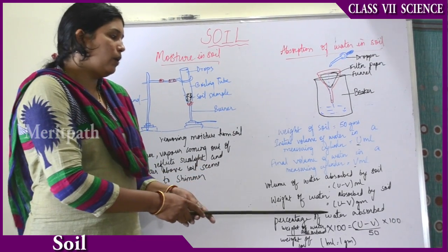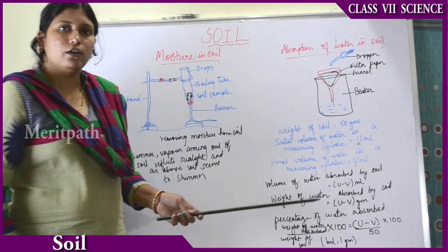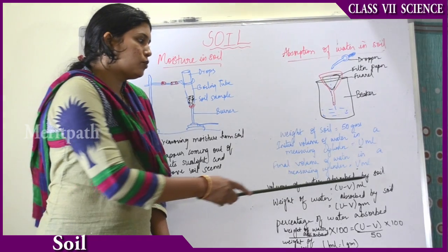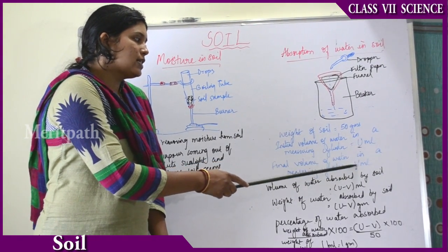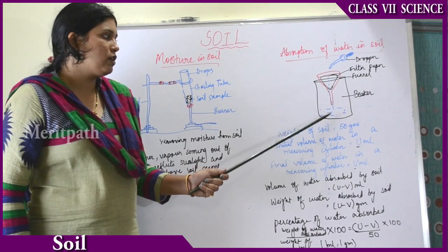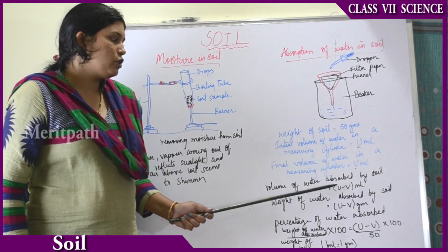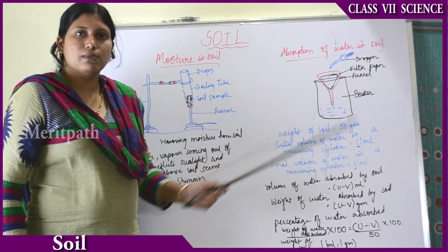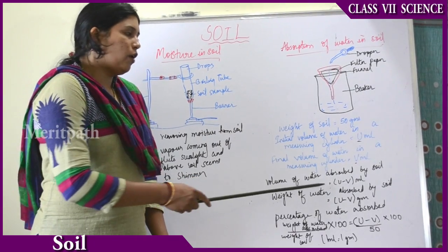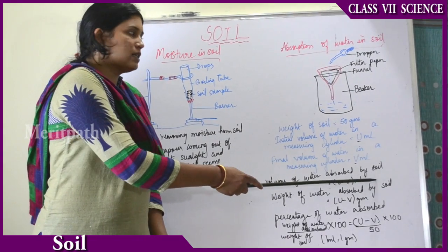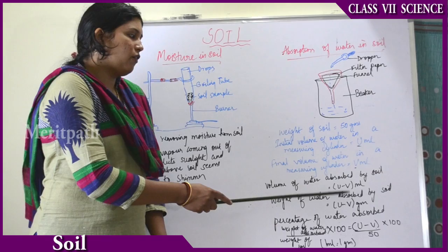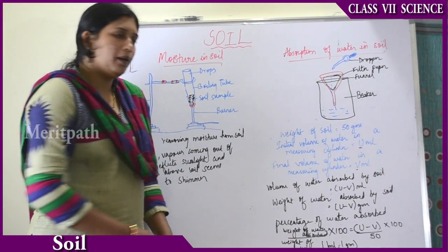With this we can calculate how much water is absorbed. The volume of water absorbed by the soil is U minus V — that is initial volume minus the final volume left — which equals U minus V ml. The volume of water absorbed by the soil is initial volume minus final volume, that is U minus V ml.